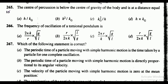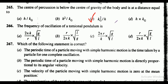Question 265: the center of percussion is below the center of gravity of the body and is at a distance equal to — the correct answer is option C, that is Kg square upon h.